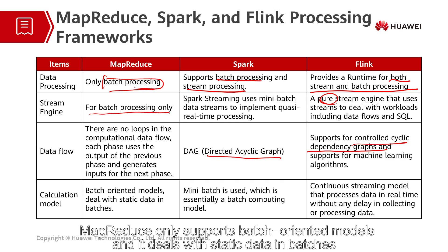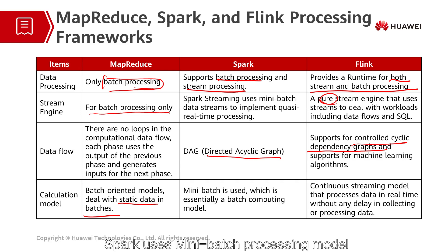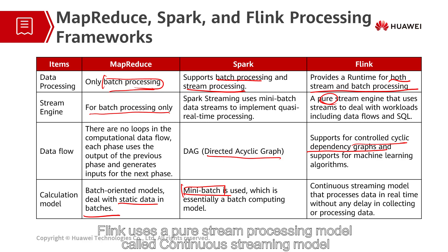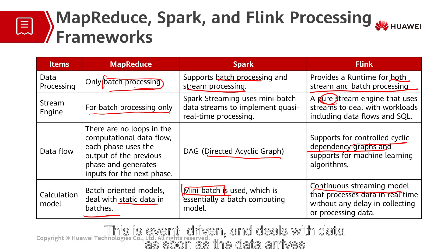For the calculation model: MapReduce only supports batch-oriented models and deals with static data in batches. Spark uses a mini-batch processing model, which is in fact a batch processing model, but the time delay can be controlled at the sub-second level. Flink uses a pure stream processing model called the continuous streaming model, which is event-driven and deals with data as soon as it arrives.